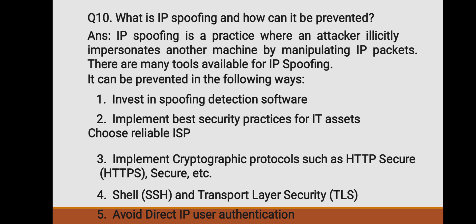What is IP spoofing and how can it be prevented? IP spoofing is a practice where an attacker illicitly impersonates another machine by manipulating IP packets. There are many tools available for IP spoofing, and it can be prevented in the following ways: invest in spoofing detection software; implement best security practices for IT assets using a reliable ISP; implement cryptographic protocols such as HTTPS, SSH, and Transport Layer Security (TLS); and avoid direct IP-based user authentication.